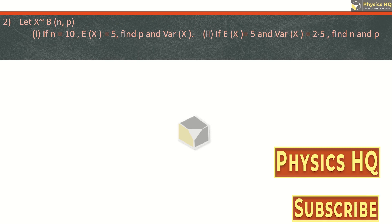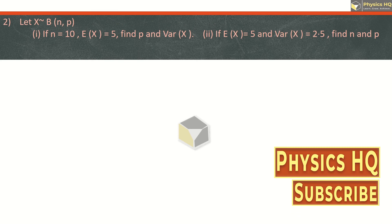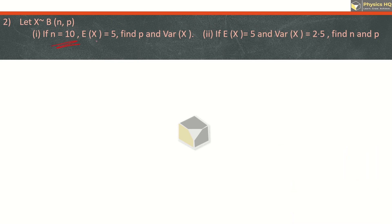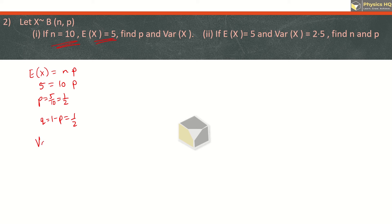Next, x is following a binomial distribution. In the first case, n = 10 and mean = 5. The mean formula is n into p. Mean is 5 and n is 10, so p = 5/10 = 1/2. This means q = 1 - p = 1 - 1/2 = 1/2. We are also asked for the variance. Variance = n into p into q = 10 into 1/2 into 1/2 = 10/4 = 2.5.